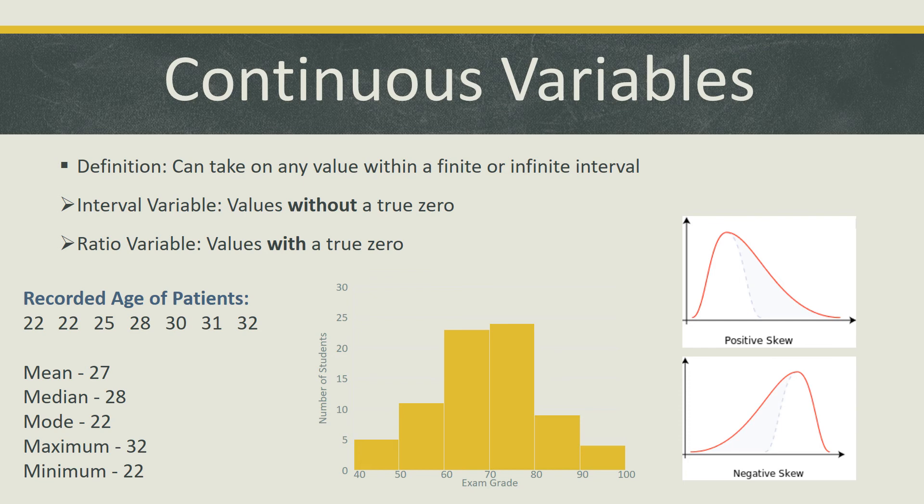Here are some ways to describe continuous variables in data. The first is an example we used earlier to summarize the recorded age of patients. Central tendency values such as mean, median, mode, maximum, and minimum values are commonly used to describe continuous variables.